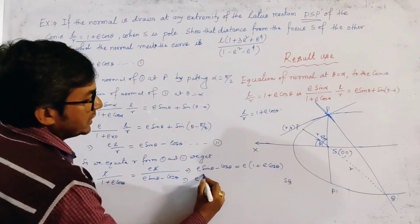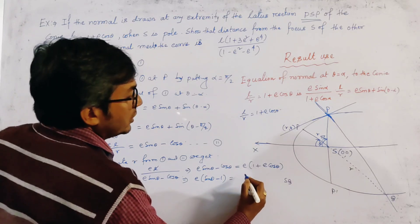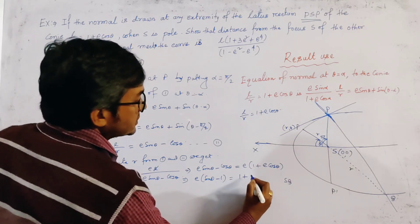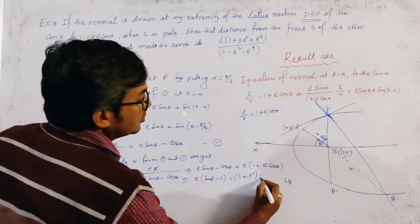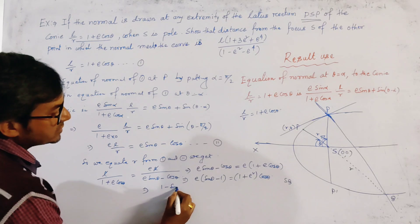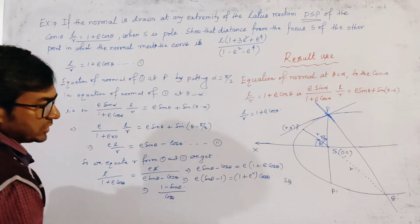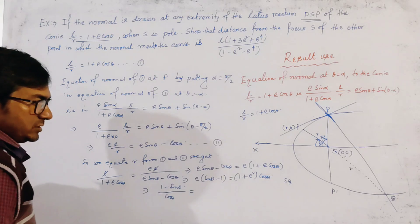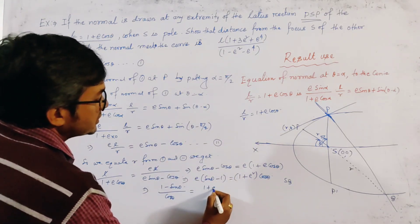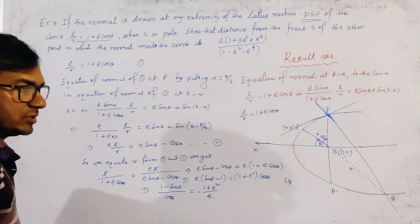This gives E sin θ − 1 = (1 + E²) cos θ, which rearranges to (1 − sin θ)/cos θ = (1 + E²)/E. Wait — rearranging, we get (1 − sin θ)/cos θ = (1 + E²)/E.